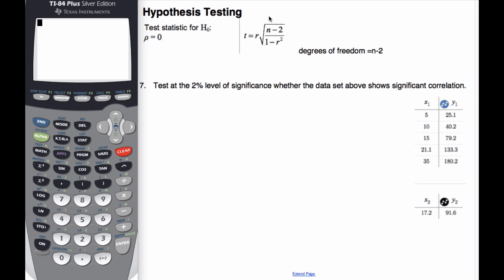Where T equals R times the square root of this quantity. The degrees of freedom, because there's two variables, is N minus 2 this time.